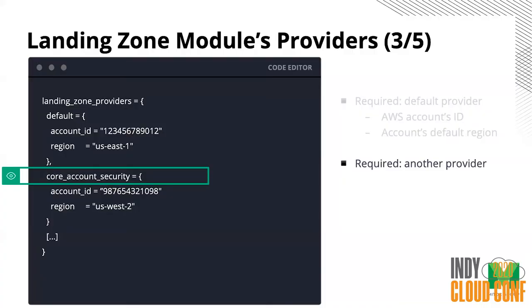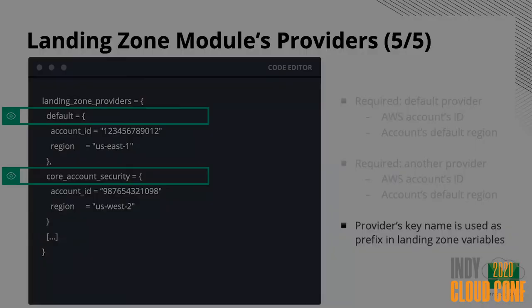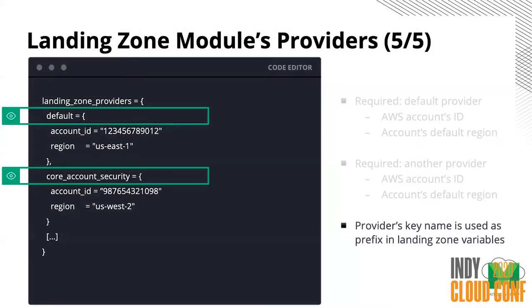As AWS Landing Zone solution has a couple of core accounts, here I just put one example for the security account. The same as for the master account, you need to provide the account ID and home region. It's very important to remember that the key names used for provider definition are later used as prefixes for variables in this solution, so they are very important to keep consistent.